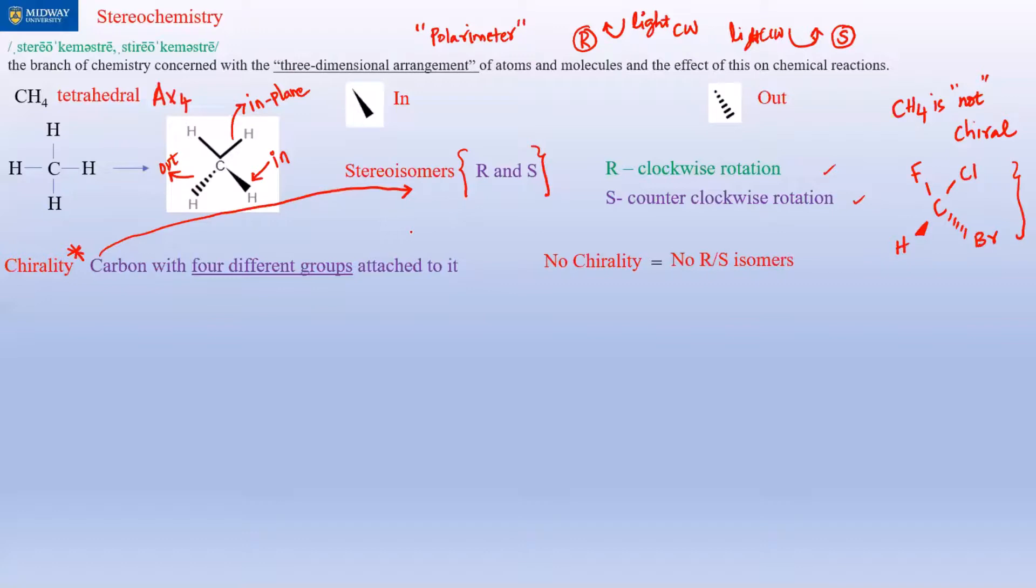Every carbon in a molecule doesn't need to be chiral, but if there is a carbon that's chiral, then that chiral carbon can be R or S. If you have four carbons in a molecule, one could be R, another could be S—there are different combinations. All could be R, all could be S.